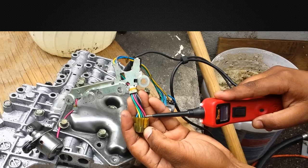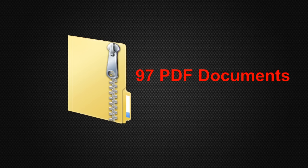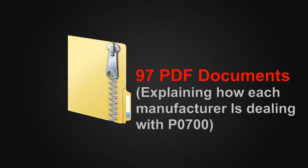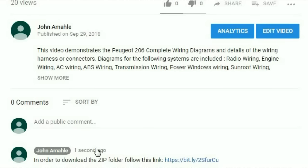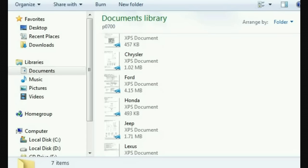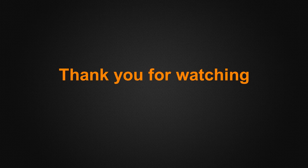But like I said, every manufacturer has their own way of dealing with this problem. So I've created a zip folder — in that zip folder you're going to find PDFs for every single manufacturer, covering early and late models, how they work, and how they resolve the P0700 error code. To download this zip folder, go to the first pinned comment of this video, follow the link, and download it. Thank you for watching.